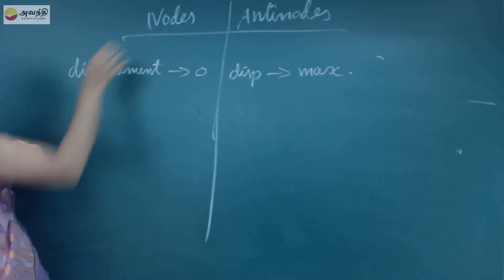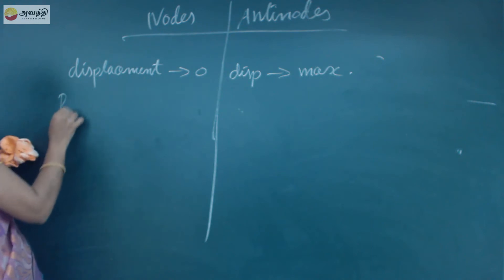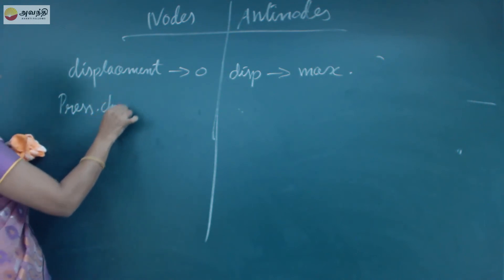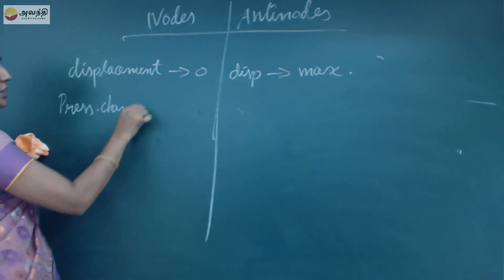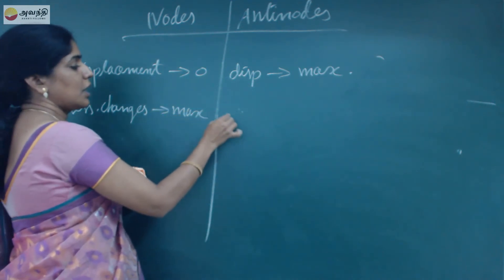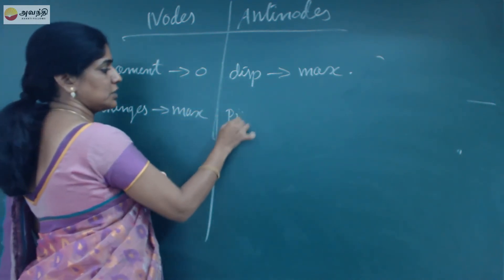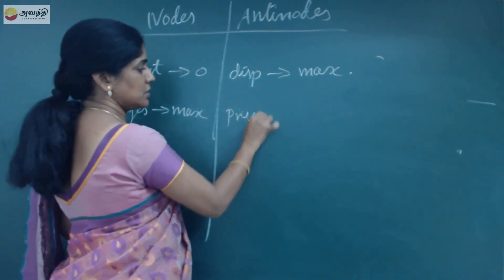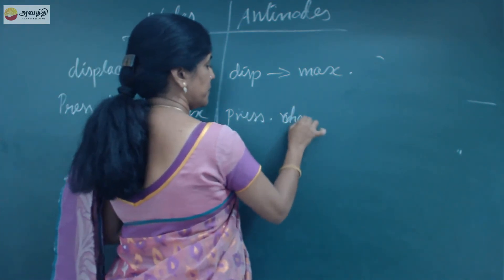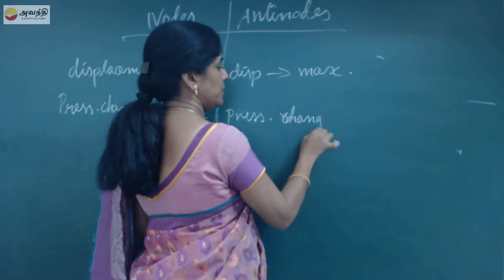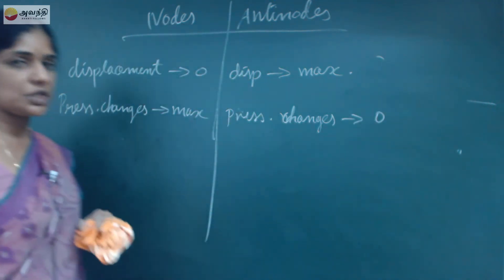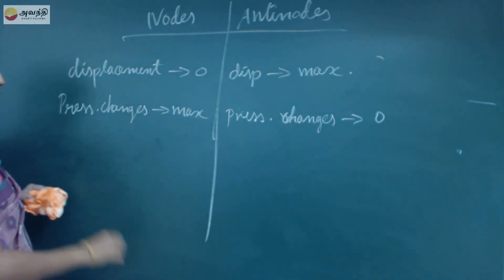At the nodes, if you see the pressure changes, the pressure changes will be maximum at the nodes. And those pressure changes will be minimum — that is 0 — at the anti-nodes.